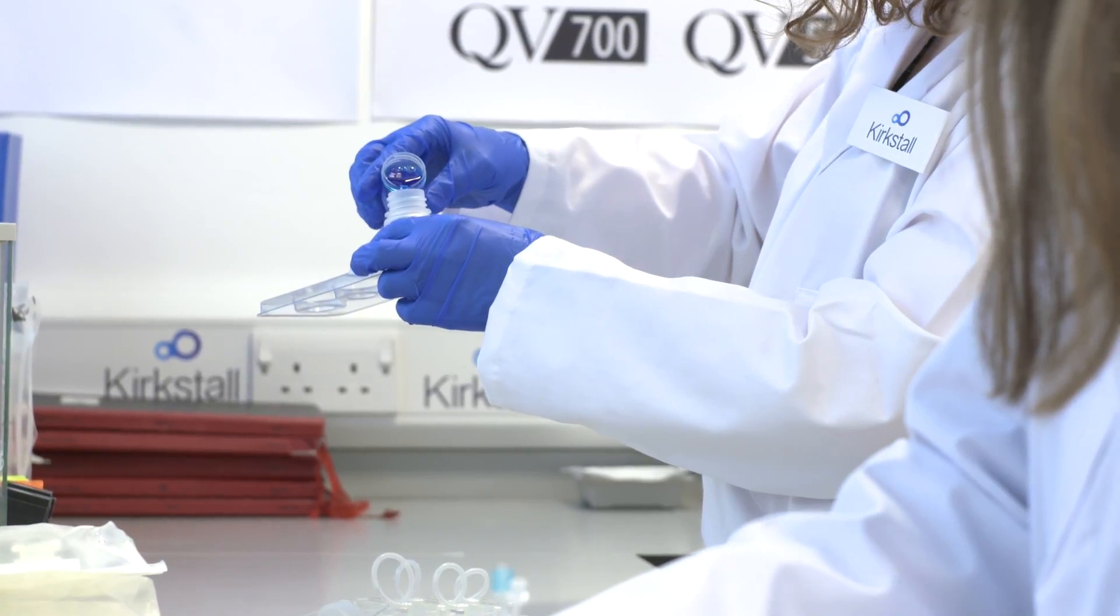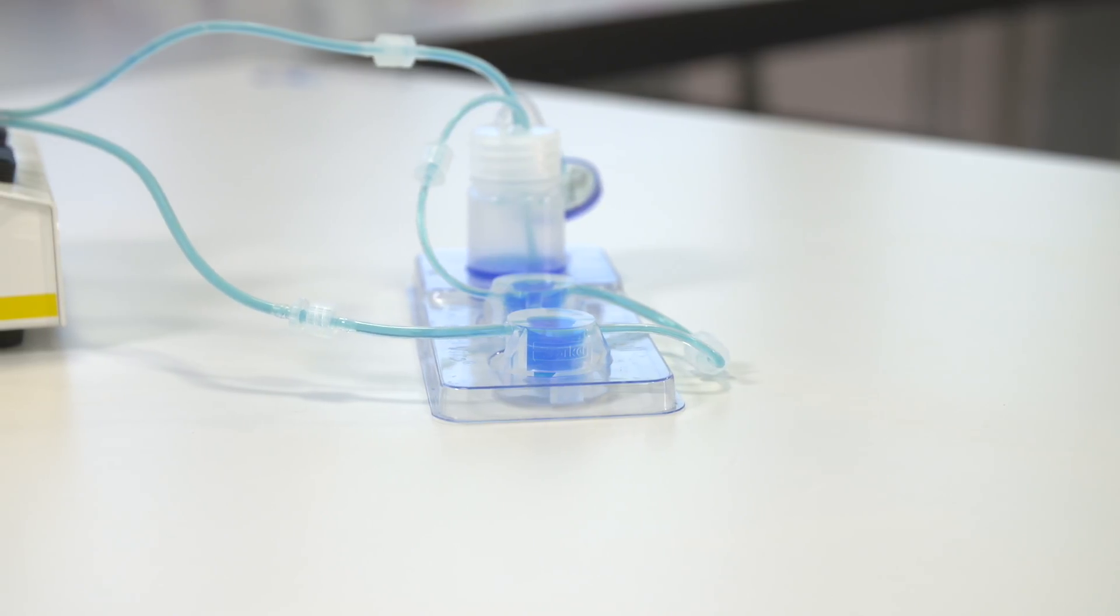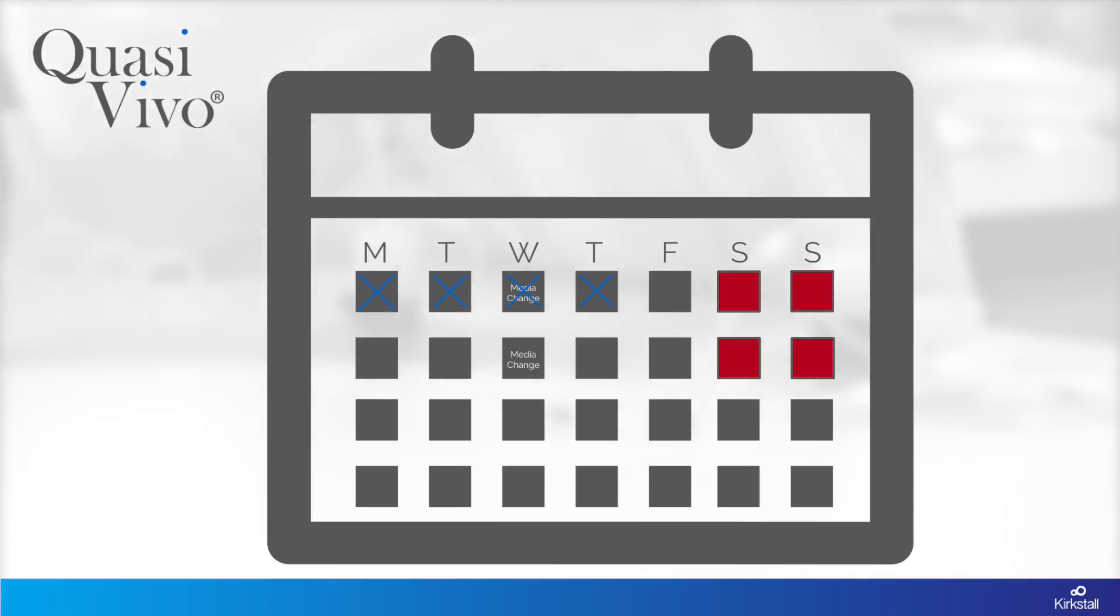The recirculating media reduces the need for frequent media changes by allowing the cells themselves to condition their own environment and maintain this for over several days. This leads to reduced perturbation of the system and gives you your weekends back.